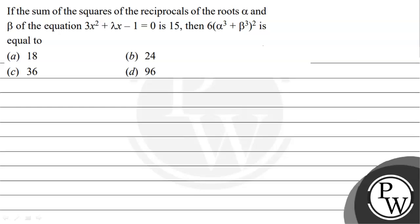Let's read the given question. The question states: if the sum of the squares of the reciprocals of the roots alpha and beta of the equation 3x² + λx - 1 = 0 is 15, then 6 times (α³ + β³)² is equal to — and the options are given below.